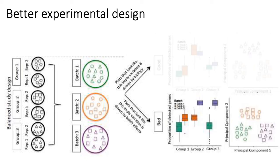In contrast, when you have batch effects, these are pretty visible in your principal components plot. In the worst case scenario where batch is essentially the strongest factor driving variation in your samples, all of the green samples referring to batch one are together, all of the orange samples referring to batch two are together, and all of the purple batch three samples are grouped together in the principal components plot. Although batch is driving most of the variation, at least with this kind of experimental design you can essentially correct for this batch effect.